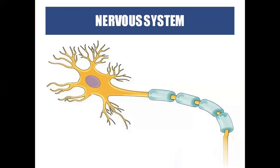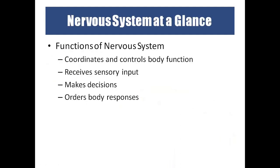This is a picture of a neuron. We call it the structural and functional unit of the nervous system. Just as a house is made up of bricks, every neuron makes up the entire brain, spinal cord, or the whole nervous system. That is why we call it the structural and functional unit of the nervous system.